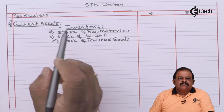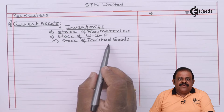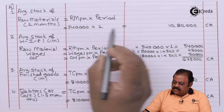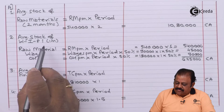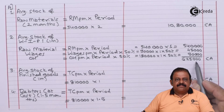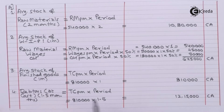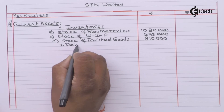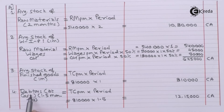First we will consider current assets. Under inventories: stock of raw materials rupees 10,80,000; stock of work in progress rupees 6,75,000; stock of finished goods rupees 8,10,000. Next we have debtors at cost price — debtors for 1.5 months — rupees 12,15,000. Cash is to be held at 40% of current liabilities, which will be calculated once we record all current liabilities.